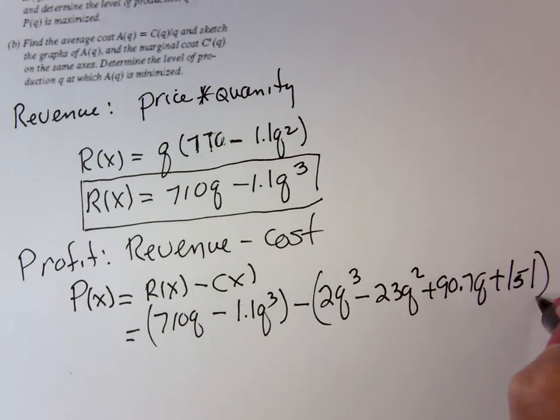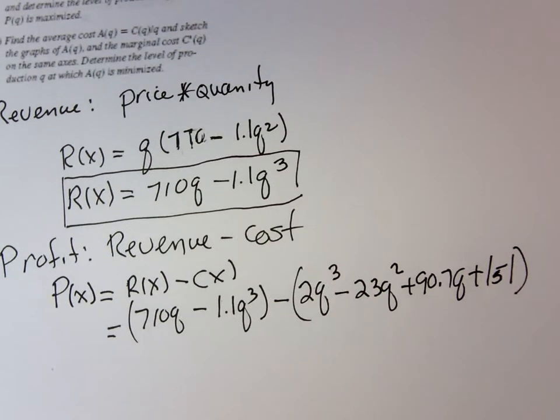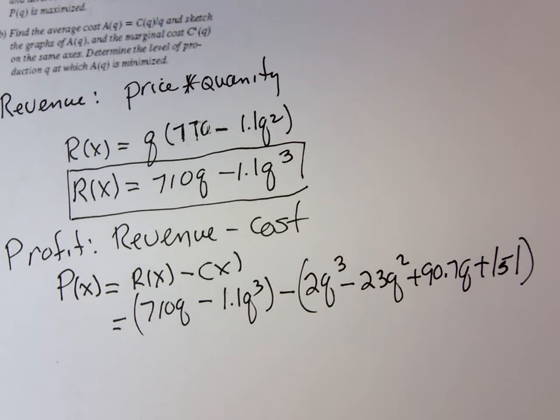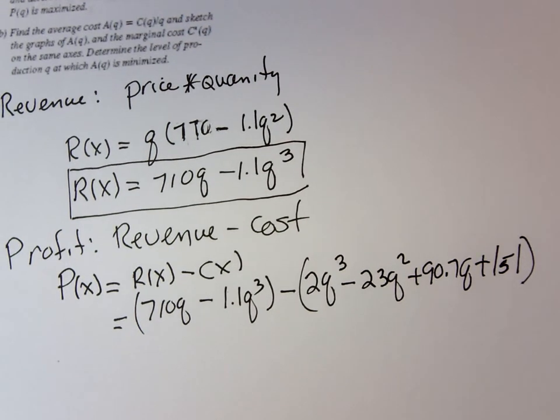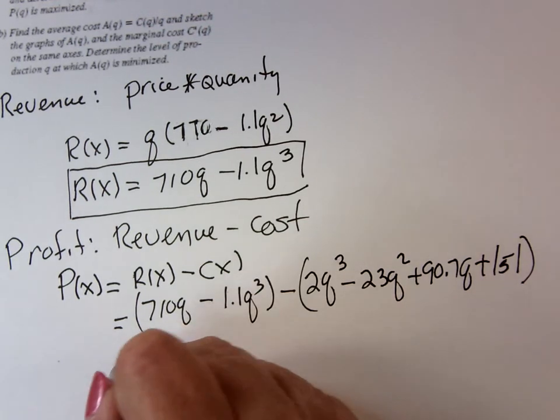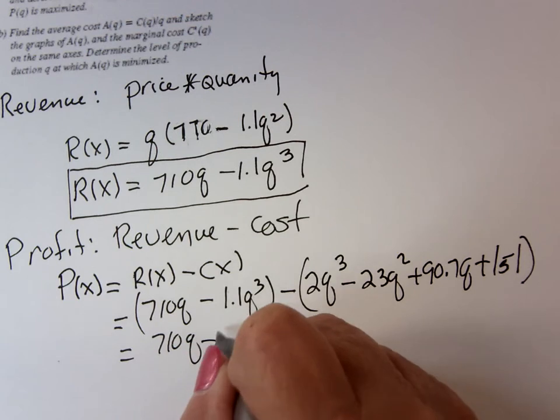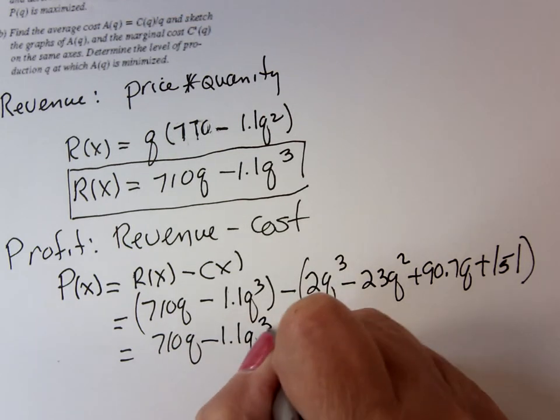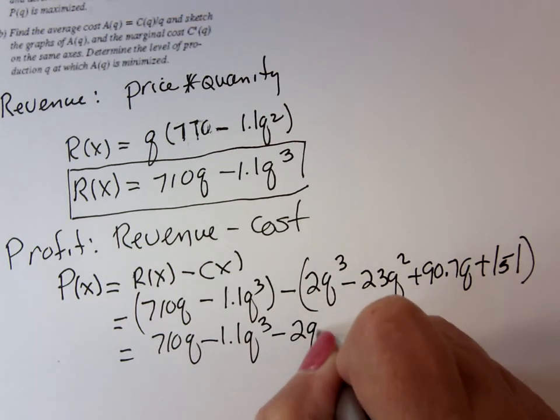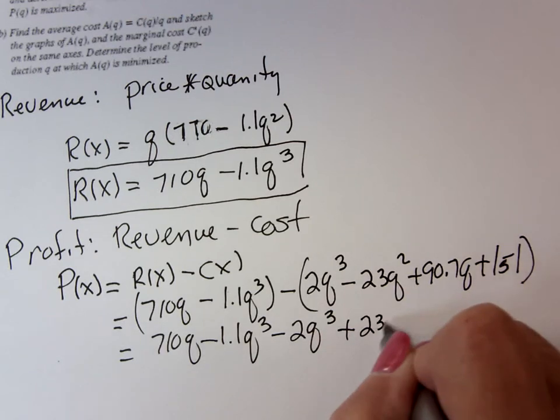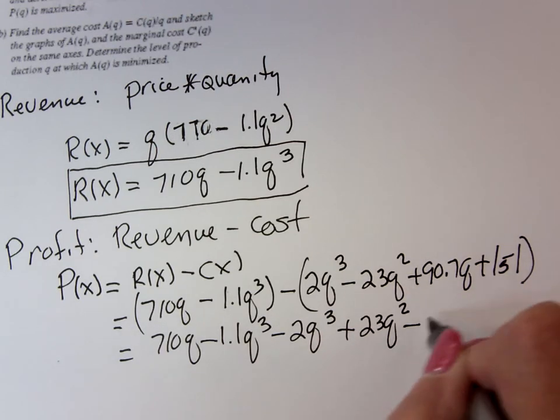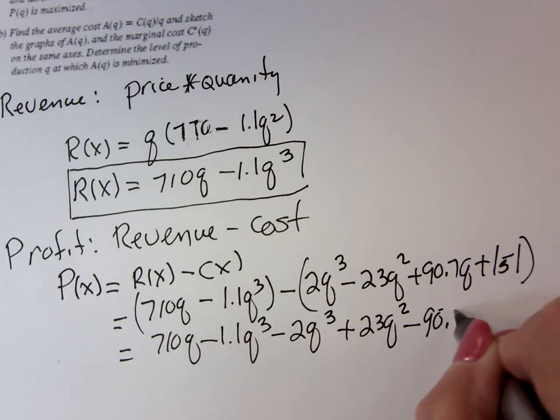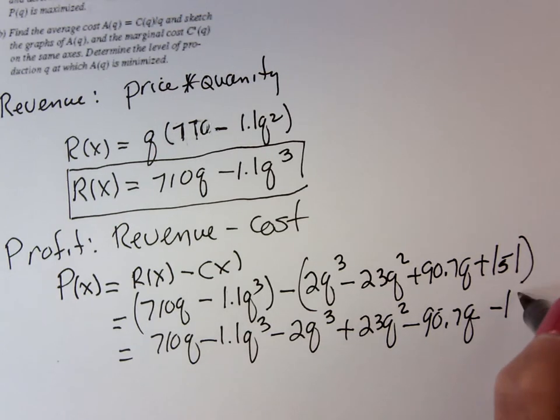And this whole thing is subtracted off. Now, why did I need to be careful about putting parentheses in? I'm going to have to distribute the negative, right? So this is going to be 710Q minus 1.1Q³ minus 2Q³ plus 23Q² minus 90.7Q minus 151.